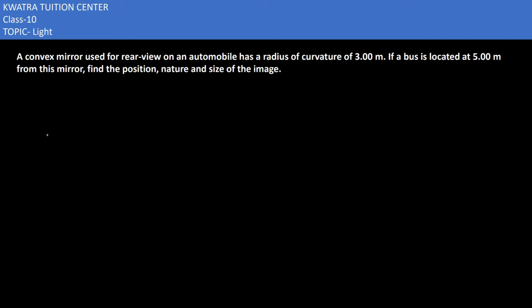Starting with the second part, you are given a convex mirror used for rear view on an automobile that has a radius of curvature of 3 meters. We can find the focal length from this: f = R/2, which means 3/2 equals 1.5 meters.